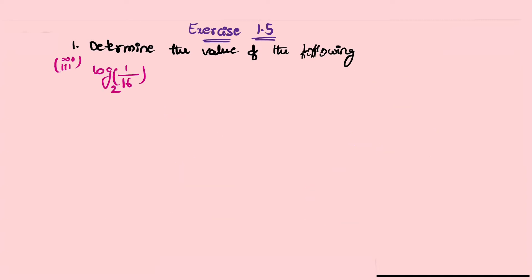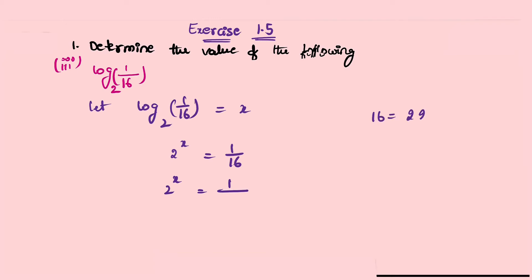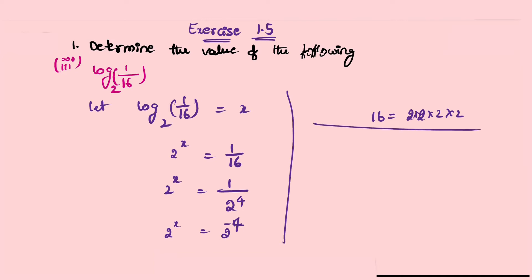Third problem: log base 2 of (1/16). Let log base 2 of (1/16) equal to x. Exponential form: 2^x = 1/16. Now 1/16 = 1/(2×2×2×2) = 2^(−4). So 2^x = 2^(−4). Bases are equal so powers are equal: x = −4. Therefore log base 2 of (1/16) equals −4.